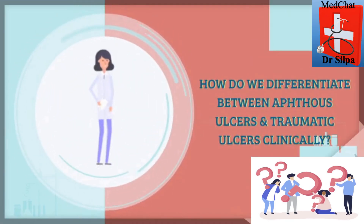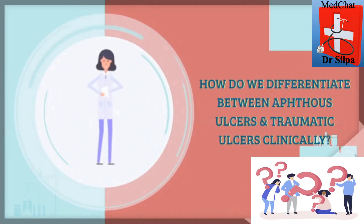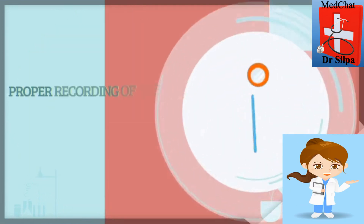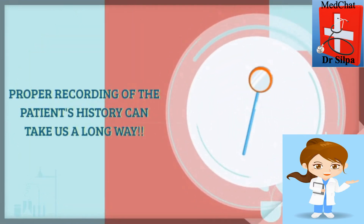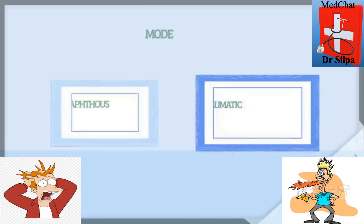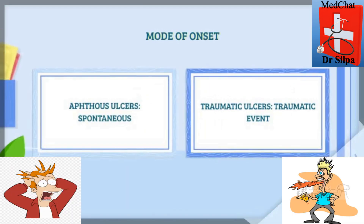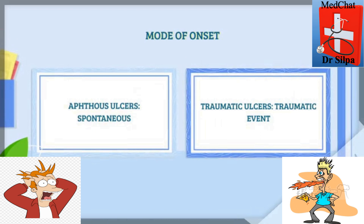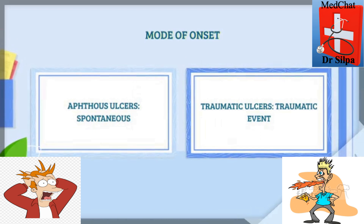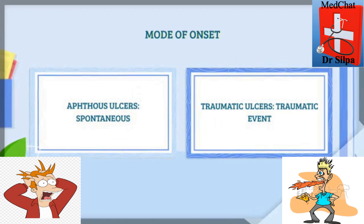How do we differentiate between aphthous ulcers and traumatic ulcers clinically? Proper recording of the patient's history can take us a long way. A patient can say an aphthous ulcer occurred spontaneously, even though we know the actual etiology can be due to